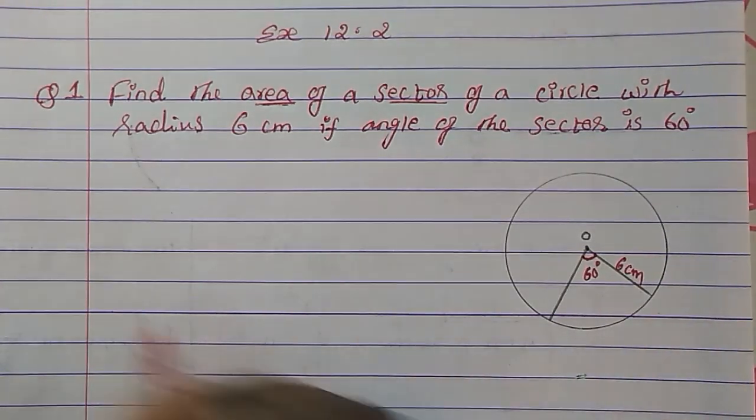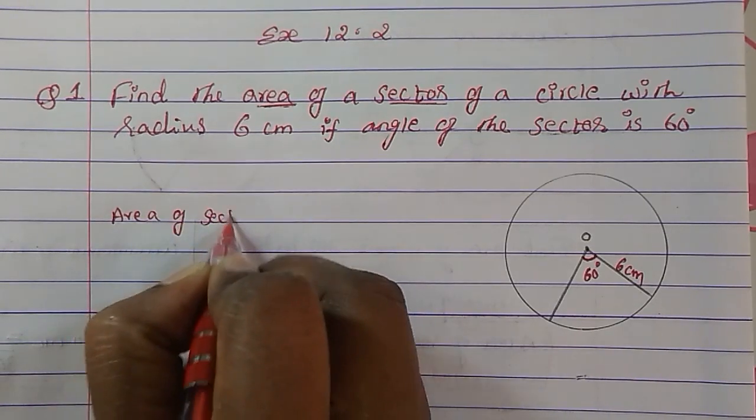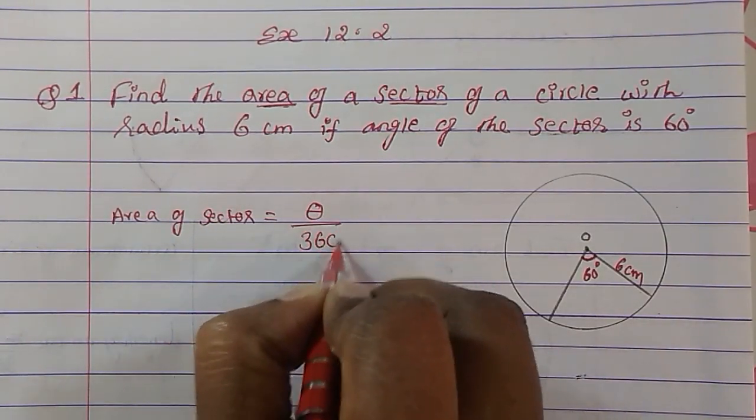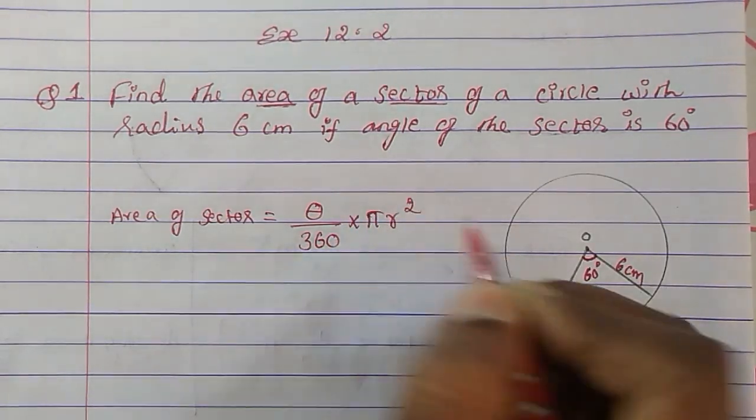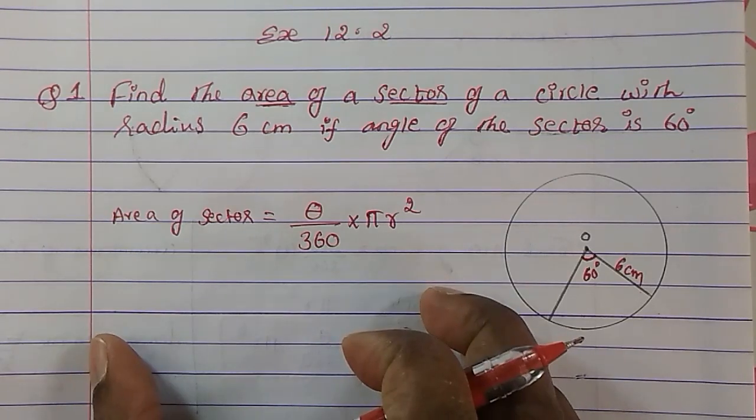That is, area of sector formula is theta upon 360 into pi r squared. This is the formula, whether it is major sector or minor sector.